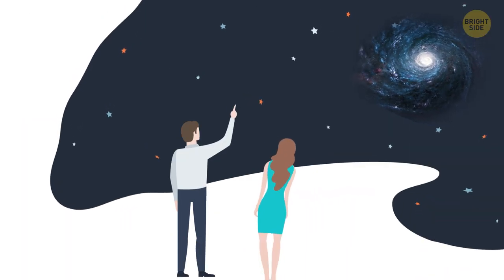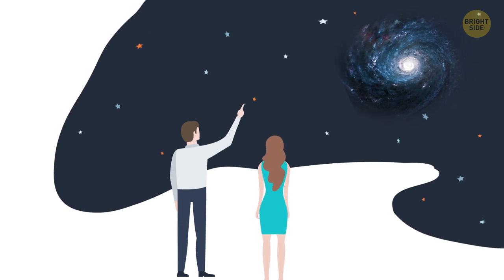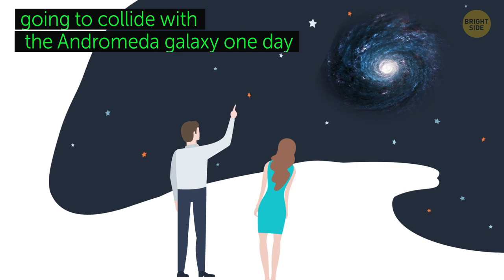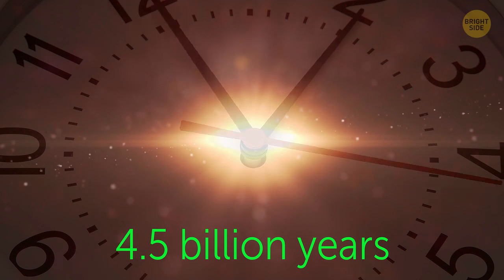These types of strange galaxies are especially intriguing because we know that our own galaxy, the Milky Way, is going to collide with the Andromeda galaxy one day. Don't panic, though! This won't happen for another 4.5 billion years!